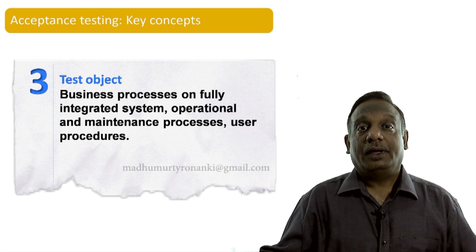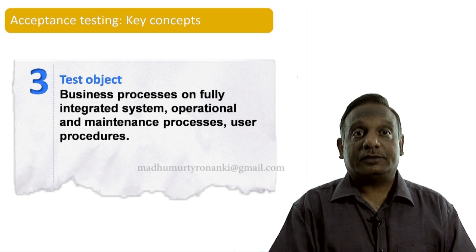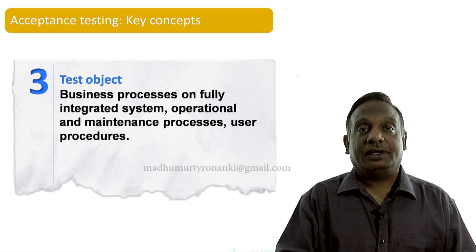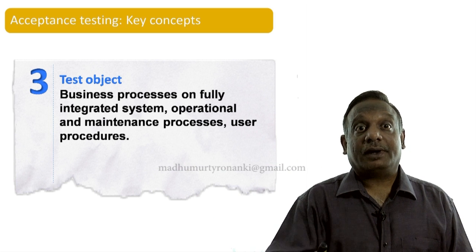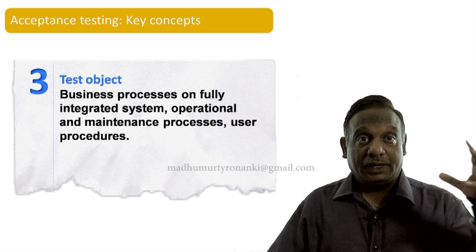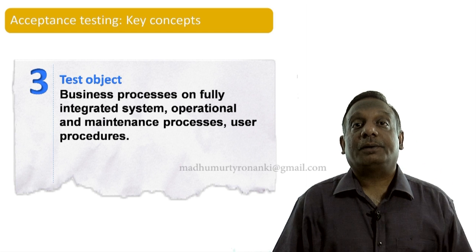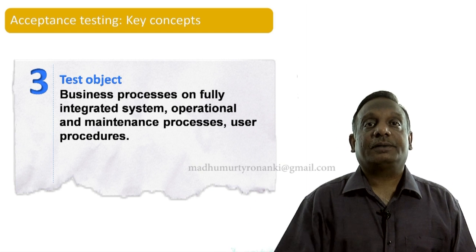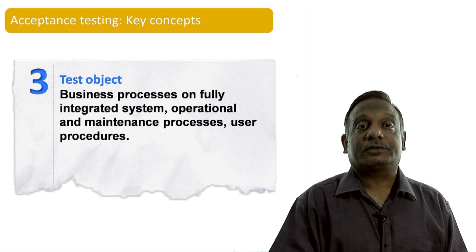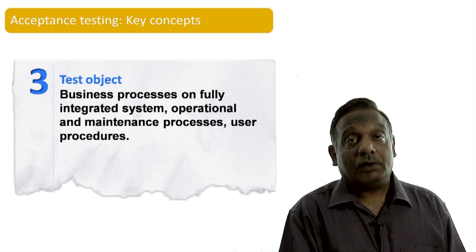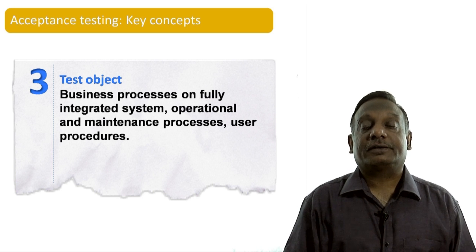At the acceptance level, the objects we are testing include business processes, the fully integrated system, operational and maintenance processes, and user procedures — because after this activity the system will land in its ultimate production environment. We have to check not only the end-to-end integrated system, but also the operational processes, maintenance processes, and procedures that users will apply. All of these are potential test objects at the acceptance level.